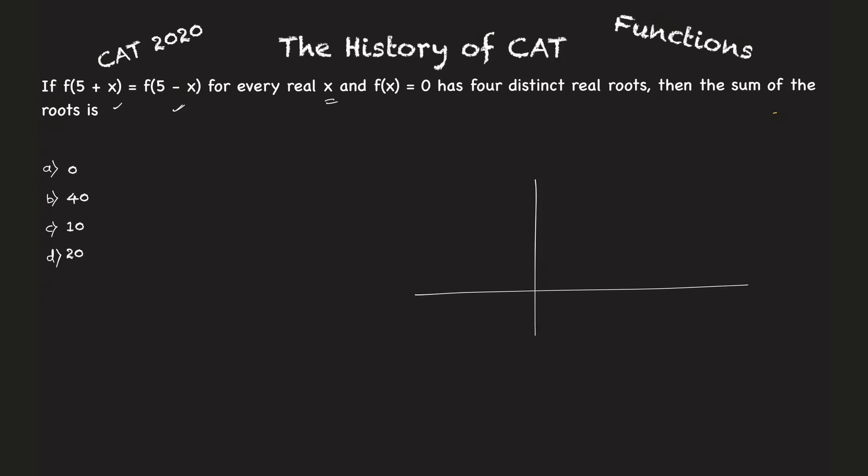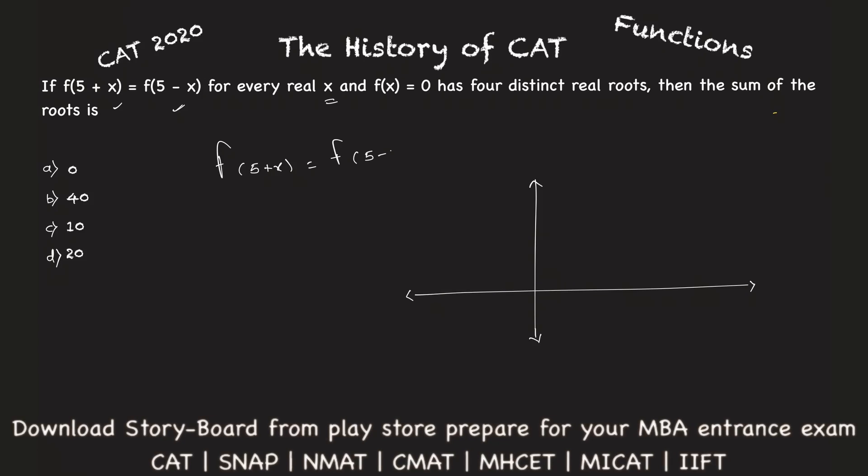Let's try and understand the graph. If we can plot something here and come up with a pattern from this, what is given here? f(5+x) equals f(5-x). So I can assume, let's start by taking the value of x as one.